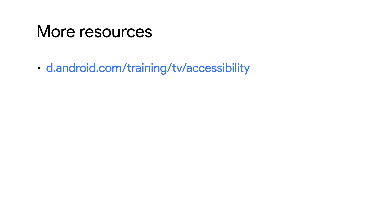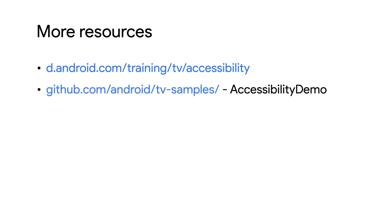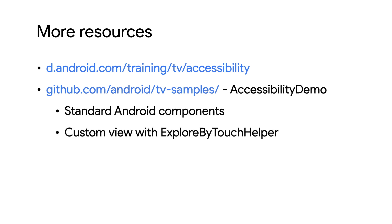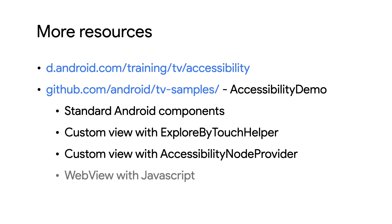To learn more about accessibility for TV apps, see our accessibility docs. They have a lot of additional info about best practices, evaluating apps with TalkBack, supporting system caption settings, and more. We also have accessibility demos in our GitHub repository — go to the TV samples repository and select the accessibility demo project. It covers standard Android components, support for custom views using both ExploreByTouchHelper and accessibility node provider, and how to make WebView content accessible when it's programmatically created with JavaScript. If there's one thing to take away from this video, it's that you should turn on TalkBack and try it out. You may end up catching issues you didn't even think about, such as if your playback controls fade while they're still being announced by TalkBack. If this video was helpful, please like it and subscribe to the channel to learn more about Android app development.